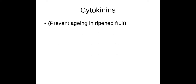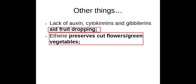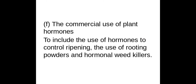Cytokinins prevent aging. Other things we need to know are that auxins, cytokinins and gibberellins can aid fruit dropping, and ethene preserves cut flowers and green vegetables as well. That is everything we need to know on the commercial use of plant hormones.